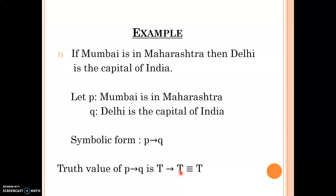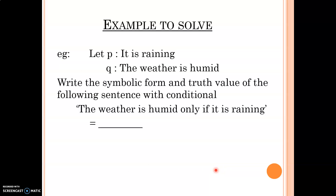Example 2 — solve this question yourself. Let P be 'it is raining' and Q be 'the weather is humid'. Write the symbolic form and truth value of the following sentence using the conditional: 'The weather is humid only if it is raining.' Note that 'only if' appears in the middle of the statement, so you have to identify P and Q carefully and try to solve this.